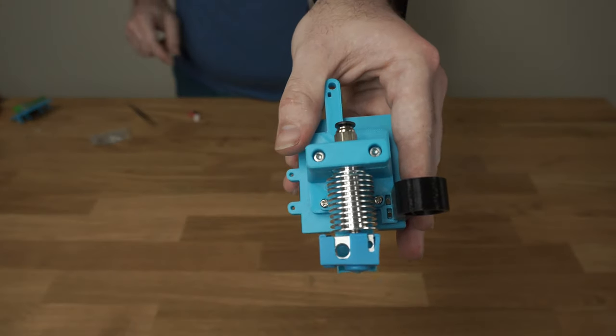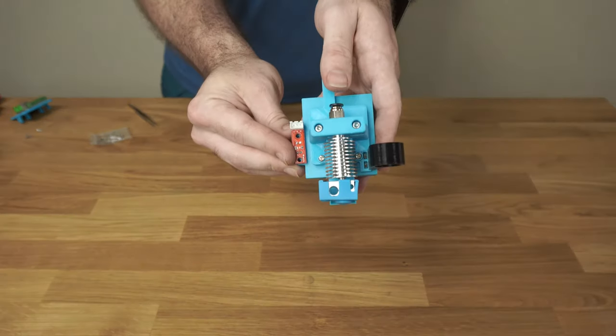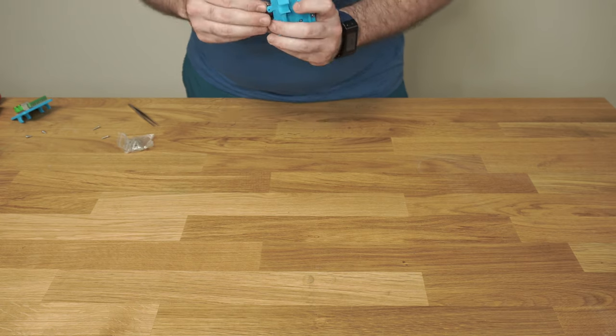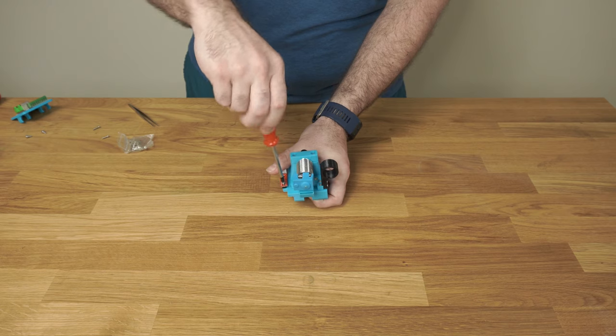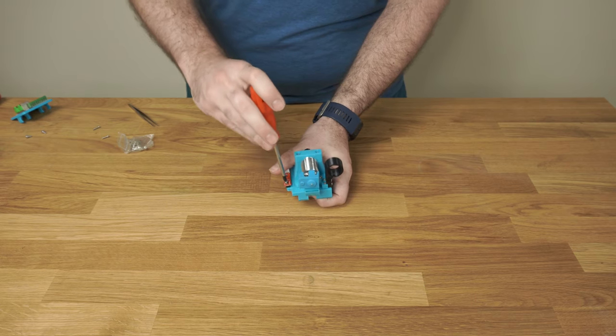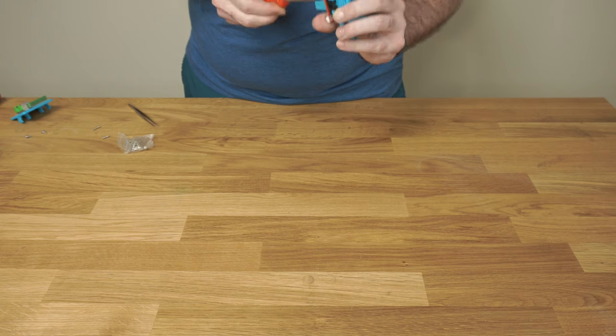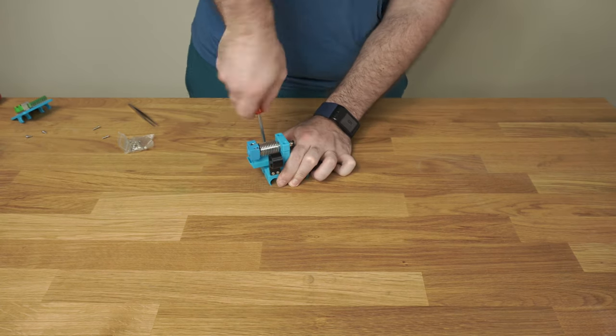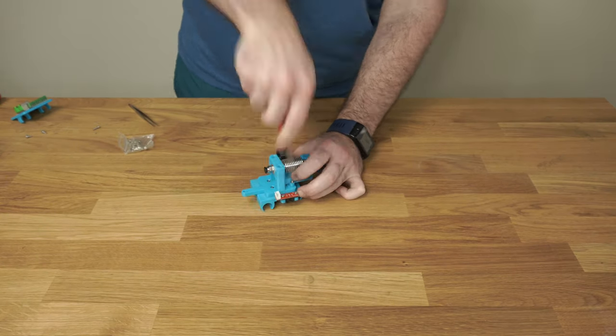Then we can mount the fan before it gets too busy in there. That's the setup so far. Then we can add our end stop sensor with two more M3 by 10s. The fan and the sensor do not thread into nuts—they just thread directly into the plastic.